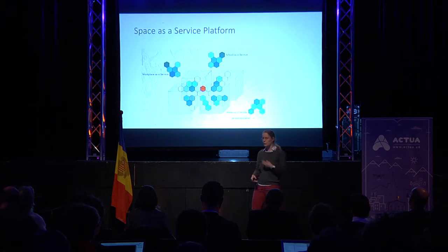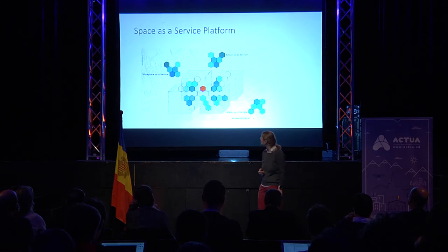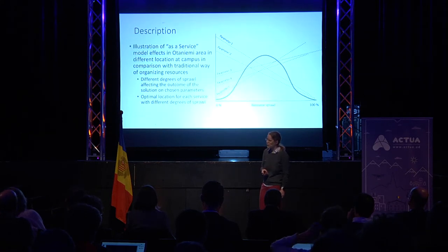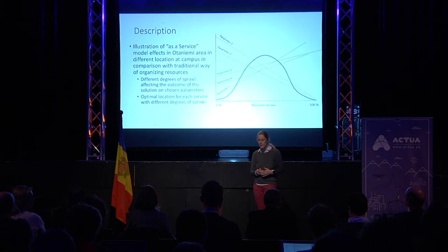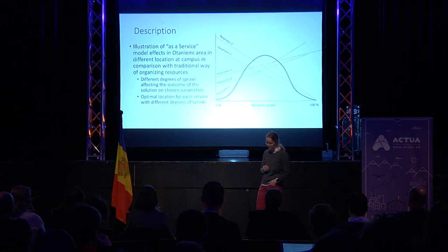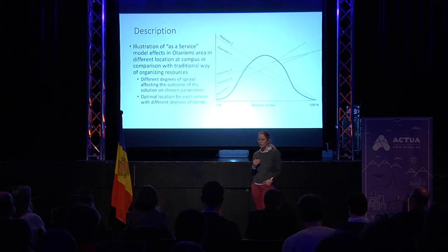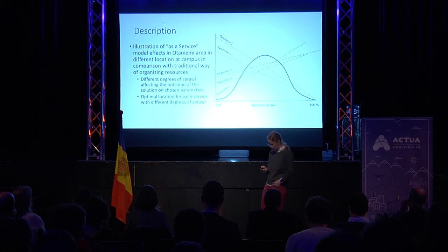We also try to build the model so that it could be generalized to other services — other spatial services, workplaces, hotels, and so on. In the model we also try to optimize so that we have some qualities that increase or decrease as we change the level of how big a part of the spaces are distributed in the solution. Some qualities decrease and some increase, and somewhere in between, as we change the level of sprawl, we could find an optimal solution.